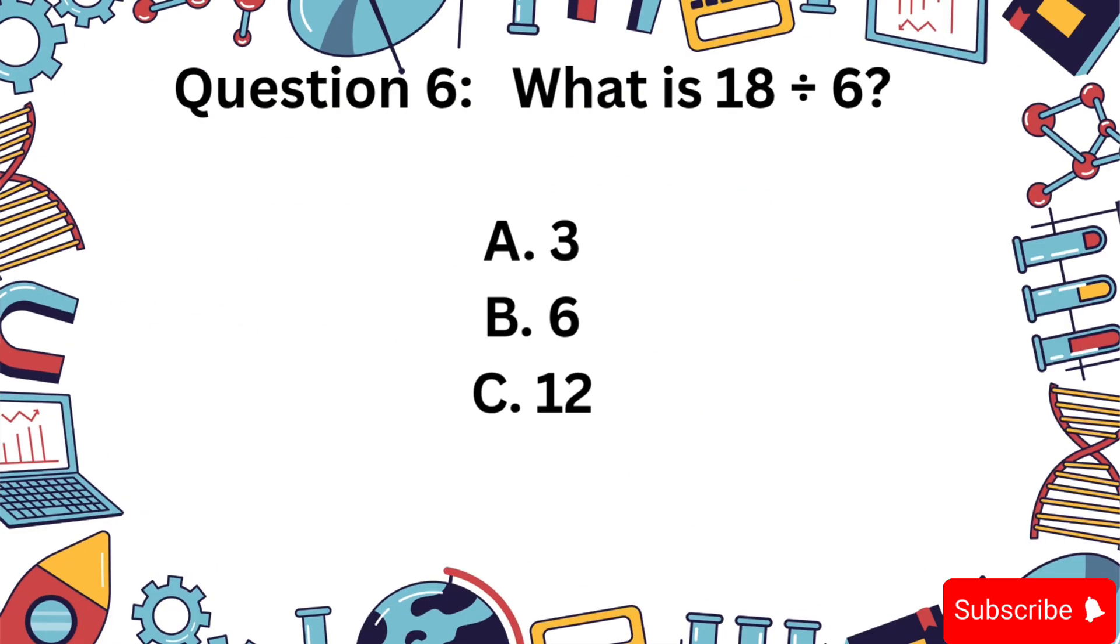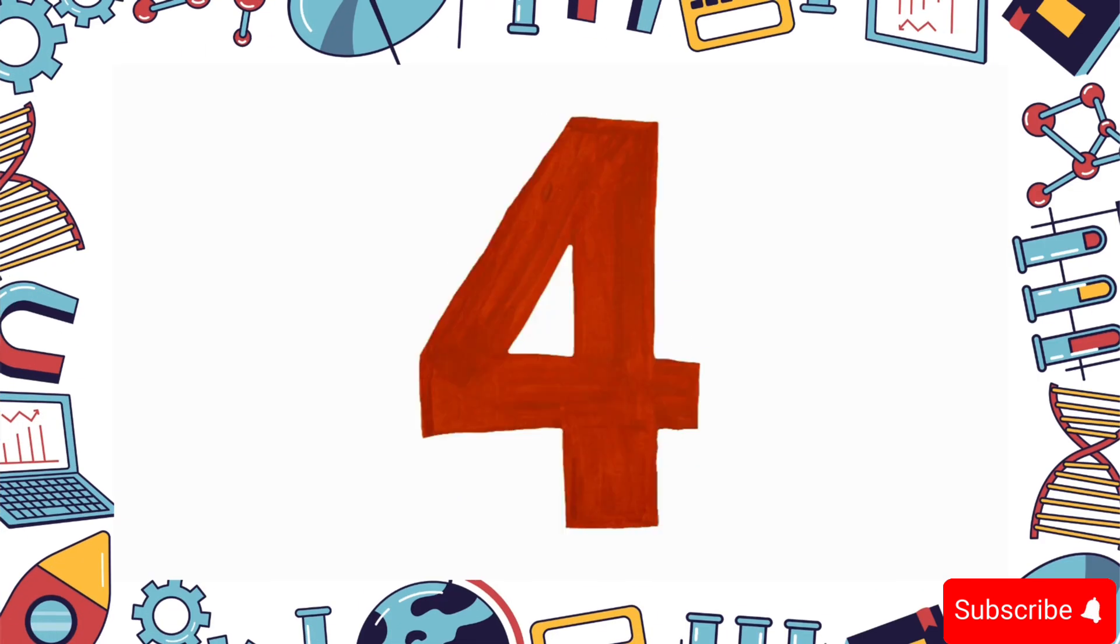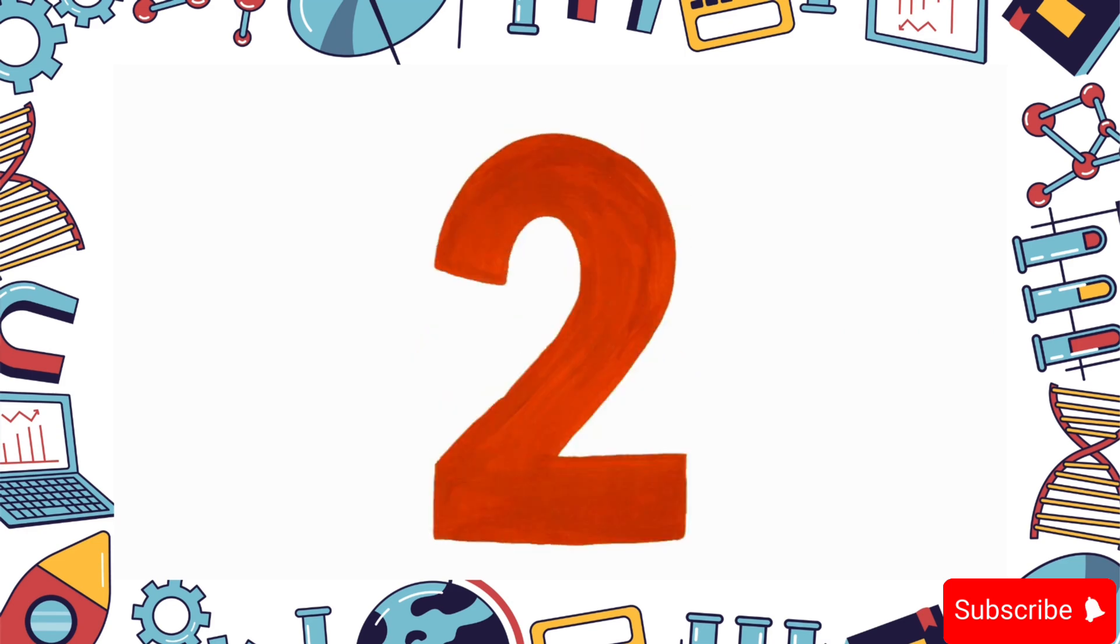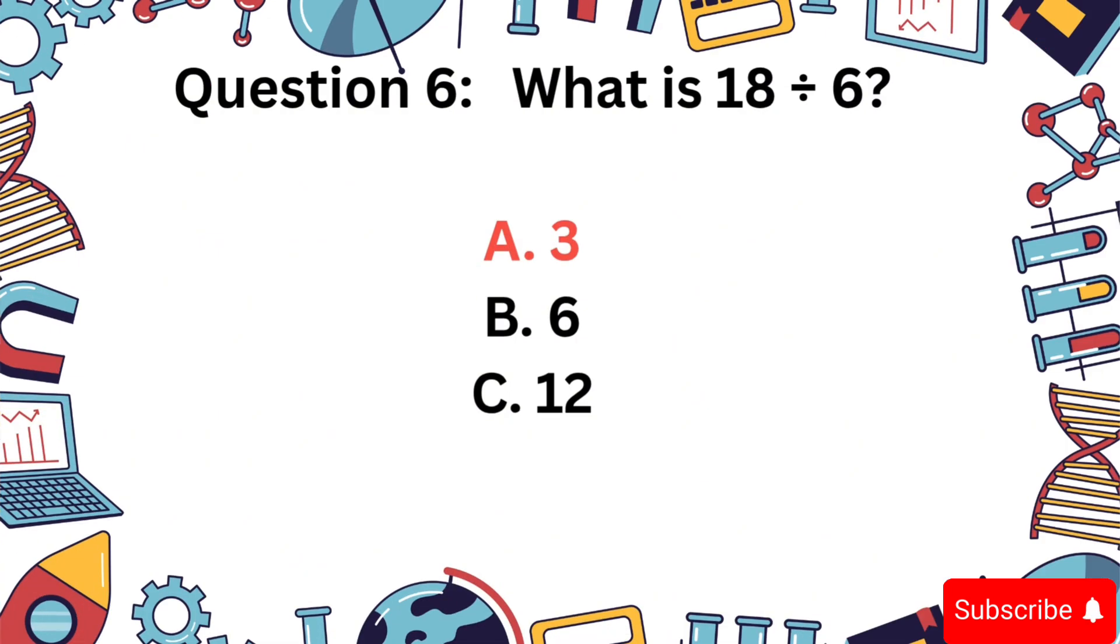What is 18 divided by 6? Is it A, 3, B, 6, or C, 12? Answer: A, 3.